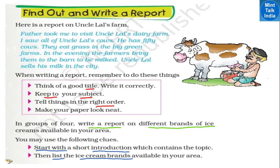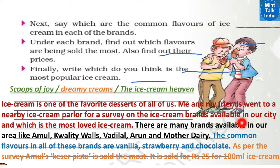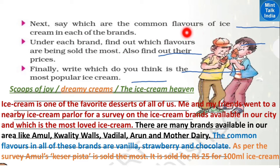Then list the brands available in your area: 'There are many brands available in our area like Amul, Quality Walls, Wadilal, Arun, and Mother Dairy.' Next, mention the common flavors in each brand — common flavors in all of these brands are vanilla, strawberry, and chocolate — these three are found in every brand.